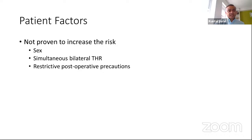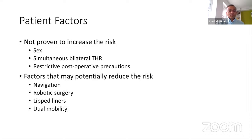Some factors haven't been proven beyond doubt to increase risk of dislocation: sex — there isn't enough evidence to say males versus females have higher risk; simultaneous bilateral hip replacements; and restrictive post-operative precautions or hip bracing haven't been proven beyond doubt. Things that may reduce dislocation risk include navigated surgery, robotic surgery, which in theory can improve component alignment, and the use of lip liners and dual mobility.